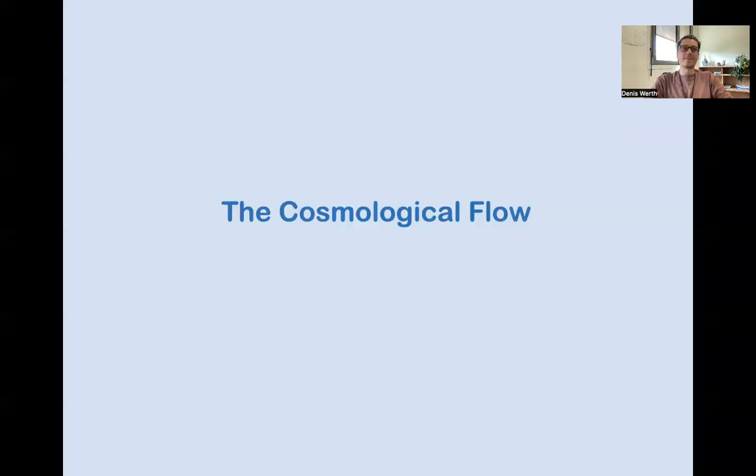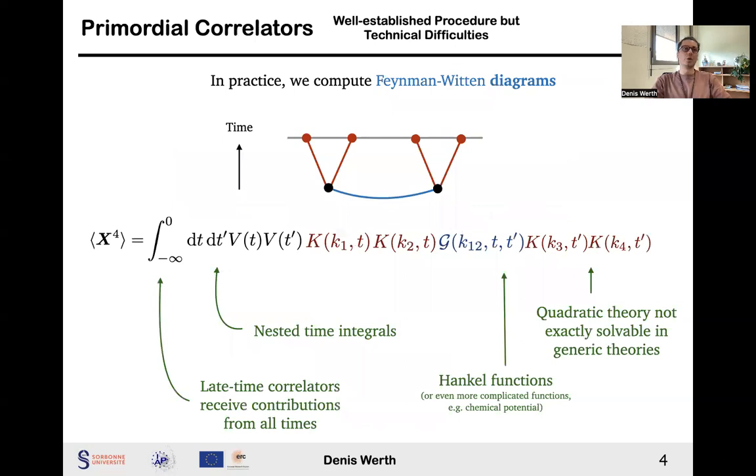My plan is to first present the cosmological flow and then to show you concrete examples of how this approach gives the theoretical tools to extract as much information as possible about new fundamental physics. We have a well-defined method of making predictions, which consists in computing so-called Feynman-Witten diagrams in perturbation theory. In practice, even at tree-level, these diagrams are very complicated to compute. The reasons are at least threefold.